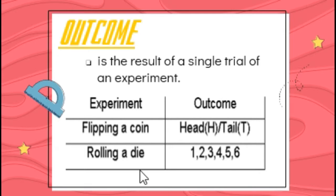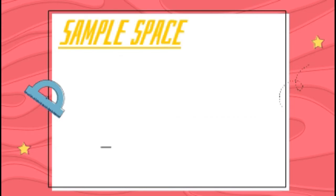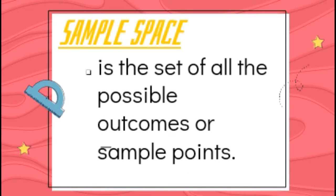In rolling a die, in a single trial, the possible outcomes are 1, 2, 3, 4, 5, or 6. Sample space is the set of all the possible outcomes or sample points.